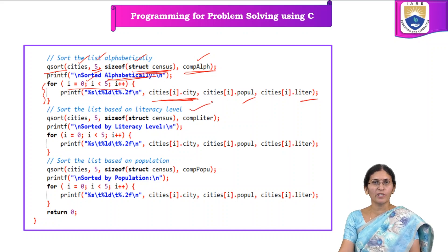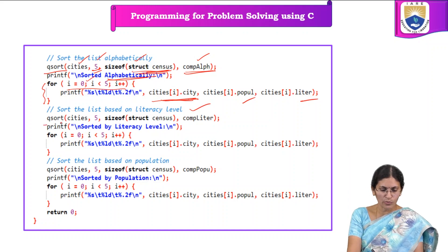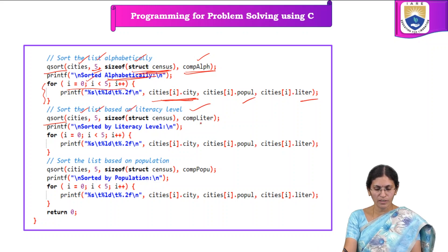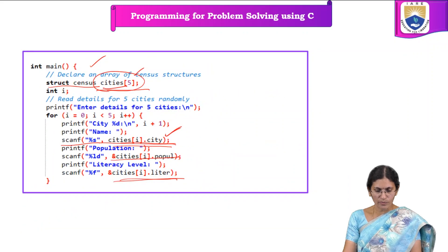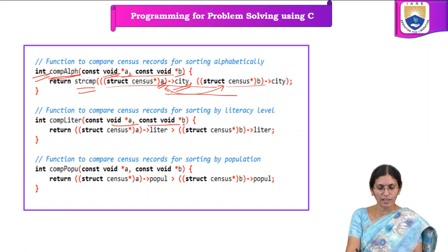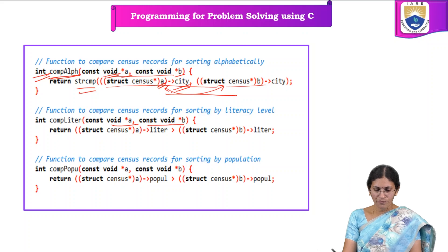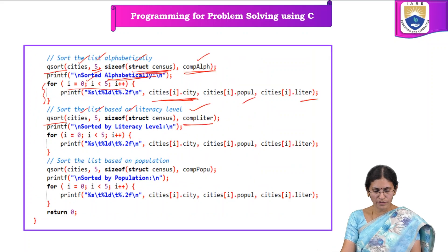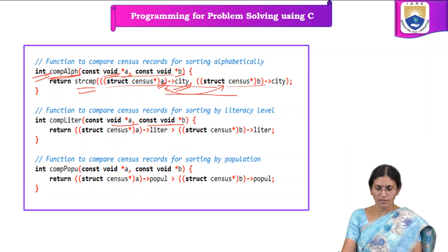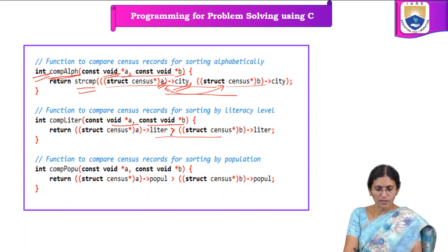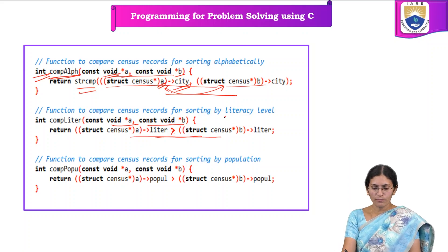To sort the list based on literacy level, we again use qsort — passing the cities array, the size of the array, the size of each data type, and a user-defined comparator function. This comparator function also requires two void pointer arguments. It compares each city's literacy level. By using this function, we can compare census records and sort them by literacy level.